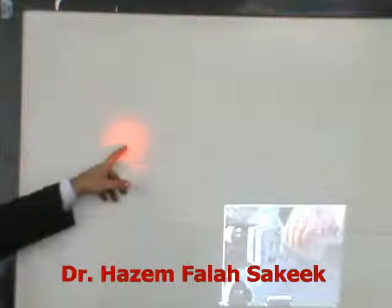Here we are — you can see a very complicated kind of pattern, another one with two dark spots, a single dark spot. And here it looks like a flower.